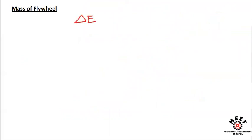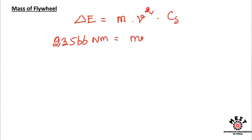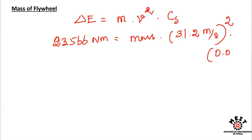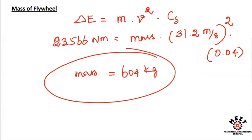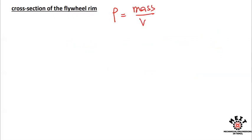Now that we know the fluctuation energy, we apply ΔE equals m×v²×Cs. Substituting: 23,566 Nm equals mass times (31.2)² times 0.04. Solving for mass gives m equal to 604 kg.